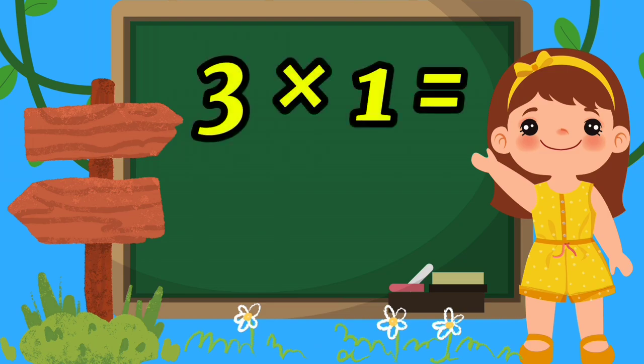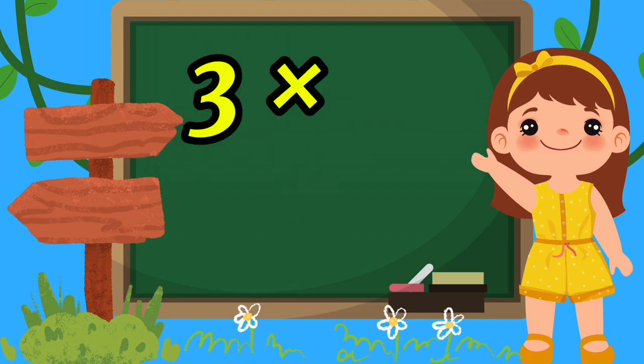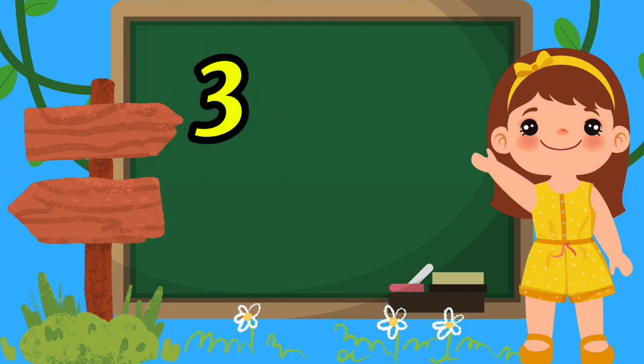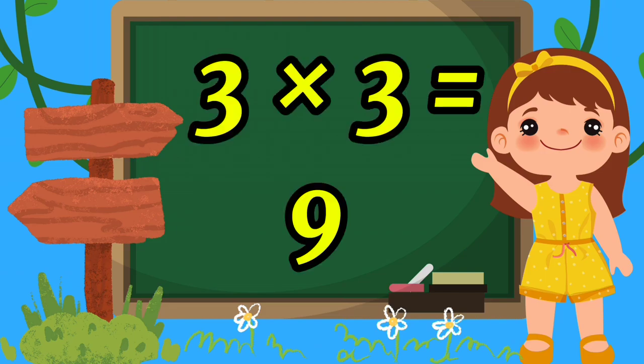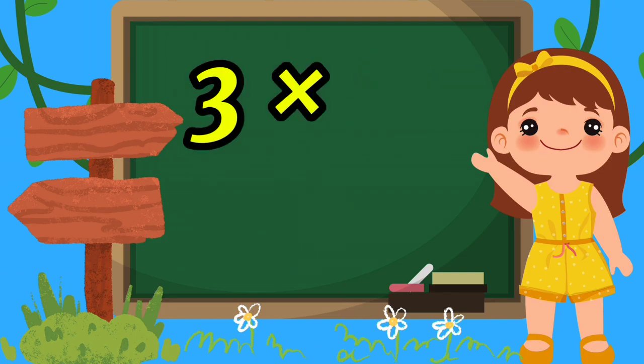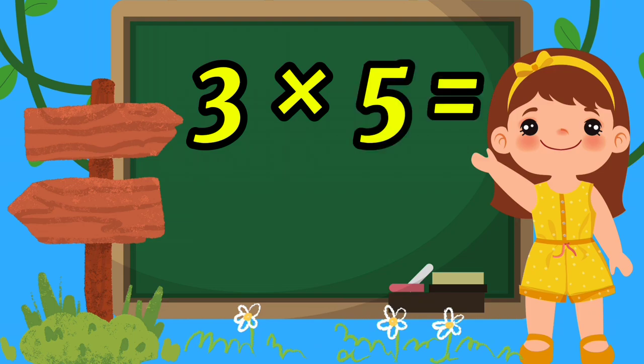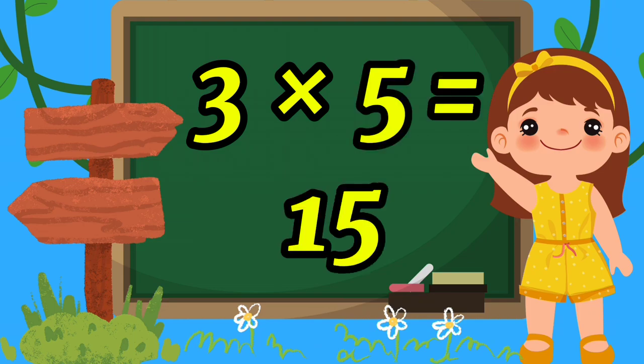Three one equals three. Three two equals six. Three three equals nine. Three four equals twelve. Three five equals fifteen.